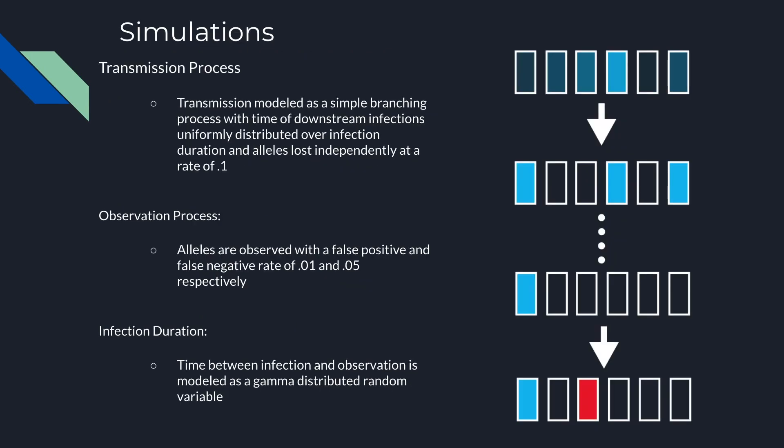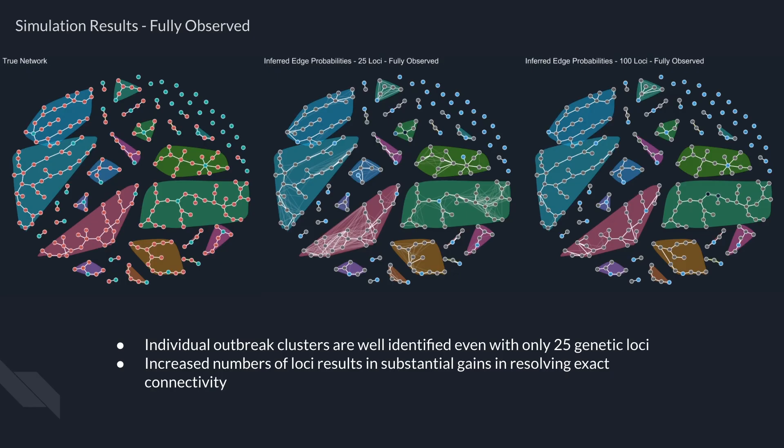We demonstrate the performance of our model by simulating 254 infections under a simple branching process, and alleles are lost independently during transmission at a rate of 0.1. Alleles within nodes are then observed with false positive and false negative rates of 0.01 and 0.05 respectively. The duration of infection for a given node is modeled as a gamma-distributed random variable.